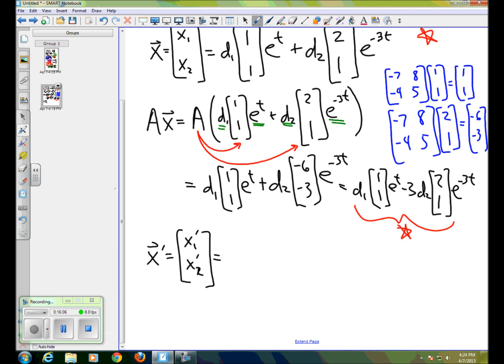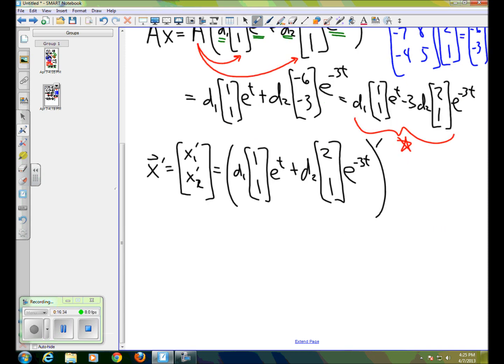So X prime equals the derivative of X1 and the derivative of X2. But we can simply take the derivative of the only part that has our variable in there. That's the E part. So let me write like this, D1, 1, 1, e to the t plus D2, 2, 1, e to the minus 3t. And we indicate with a prime that we're doing the derivative of that. And the only variable is t. The D1 times 1, 1 is a constant. It's a constant vector. And the D2 times 2, 1 is a constant vector. So the derivative of E to the t is just E to the t. So this first part just comes out D1 times 1, 1, e to the t. And then the second part, by the chain rule, we're going to get a minus 3 factor. So we'll have minus 3D2 times 2, 1, e to the minus 3t.